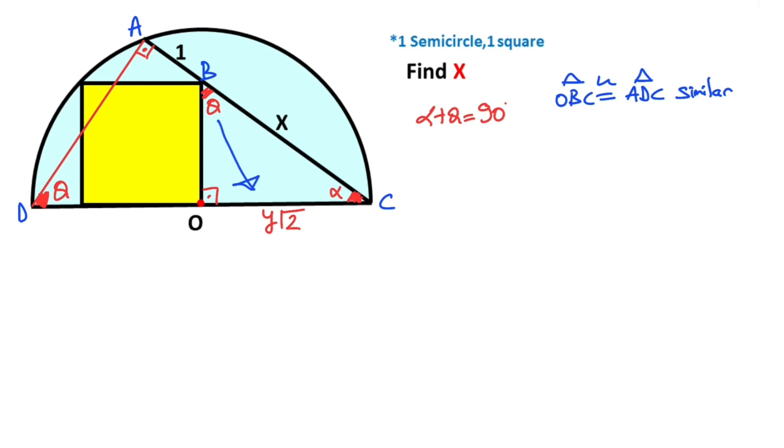So y√2, which is opposite of theta, over x+1, which is opposite of theta, must equal x, which is opposite of the 90 degrees, over this length diameter, which is opposite of the 90 degrees. And we know that here is also y√2, so diameter is 2y√2.